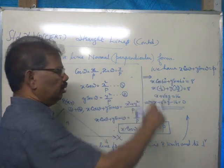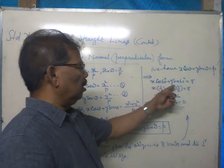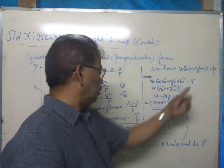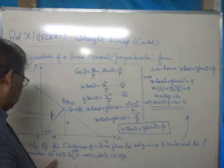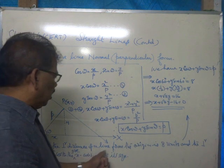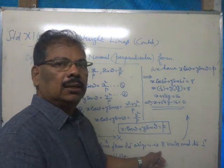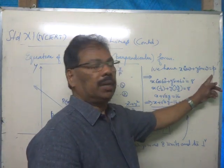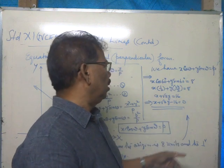Now, omega is 60 degrees. x cos 60 plus y sin 60 is equal to, in this case, the distance is, if the perpendicular distance of a line from the origin is eight, p is substituted by eight.